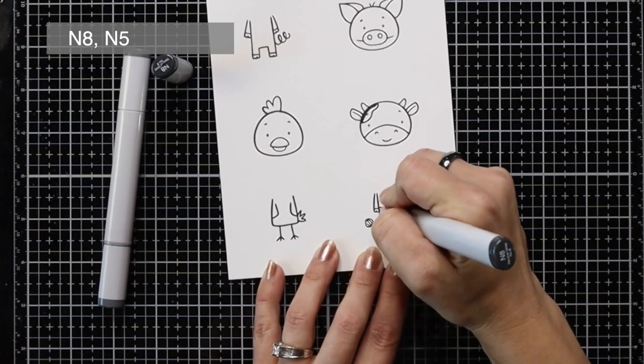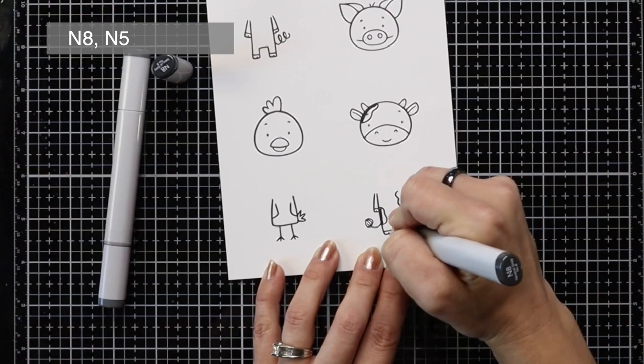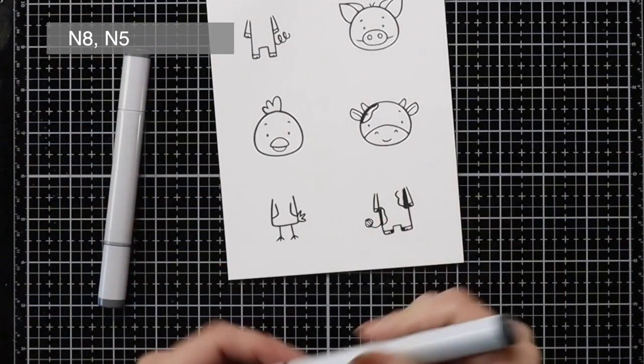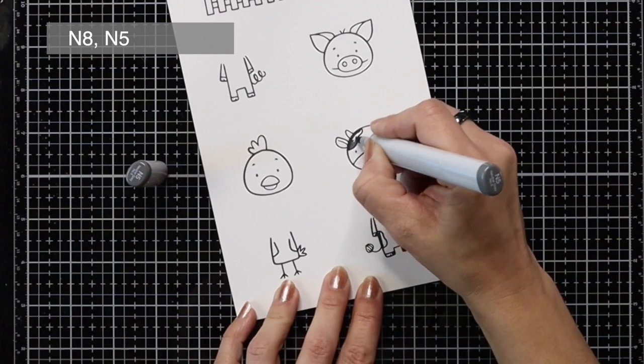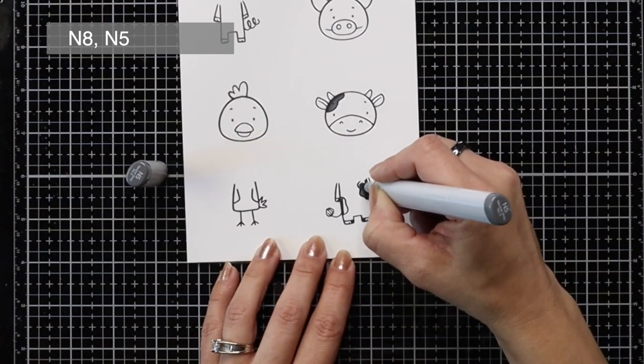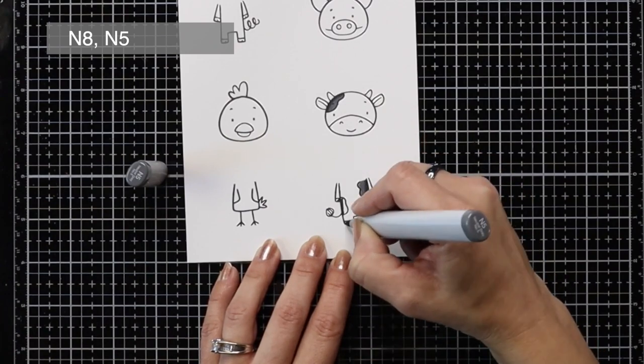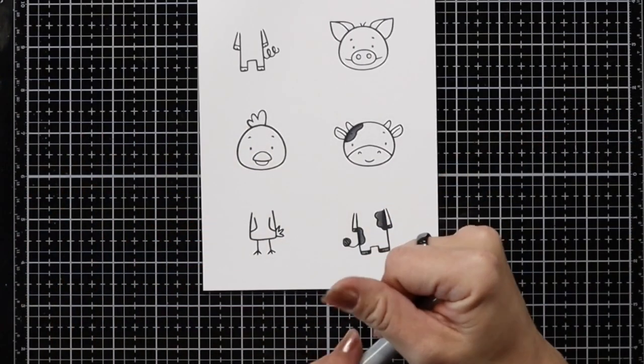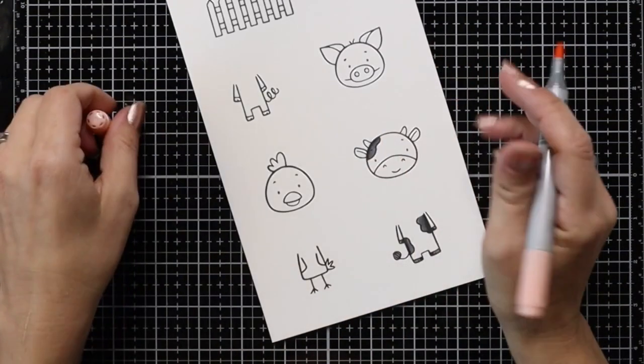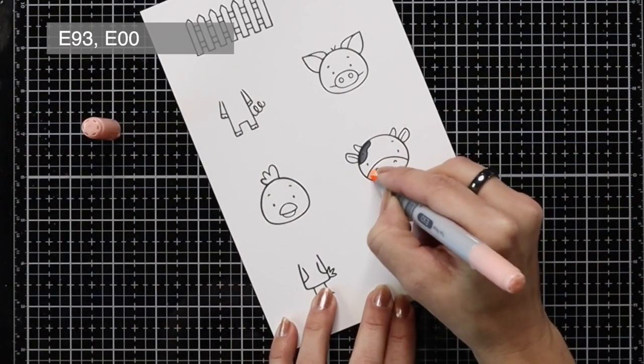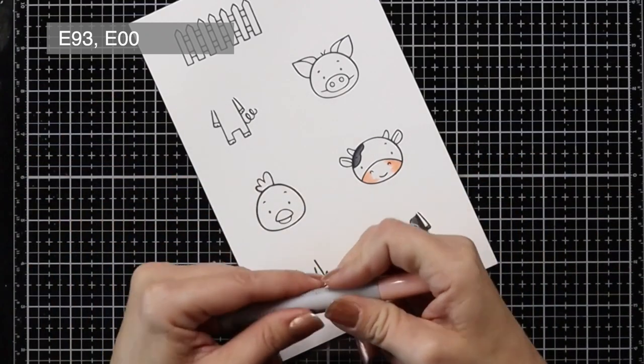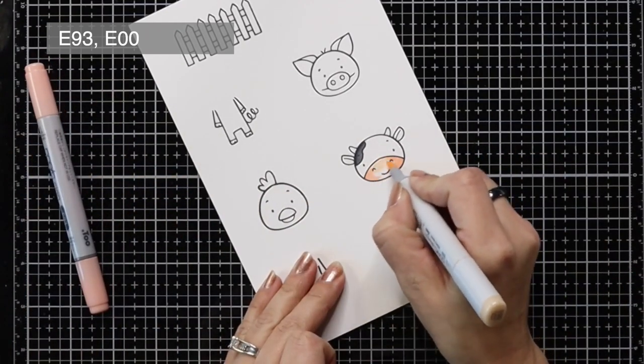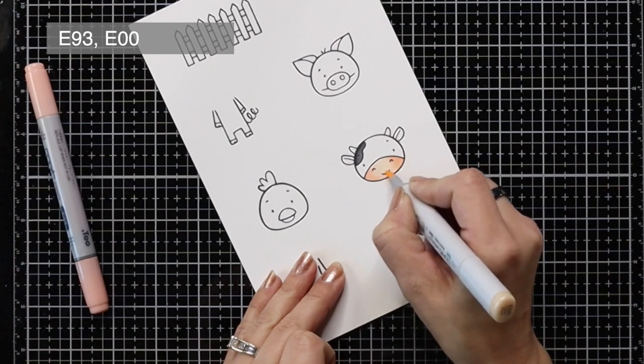I'm starting with N8 and N5 for the spots on the cow. I decided to go with black and white but you could certainly make this a brown cow as well. I'm keeping my darker color to the outside edge of the cow and then the lighter edge towards the inside so the highlight area is towards the center. I also colored in the little tips of the tail and the hooves and for the muzzle I was experimenting with a new color combination, E93 and E00, which has kind of a pinkish tone to them.